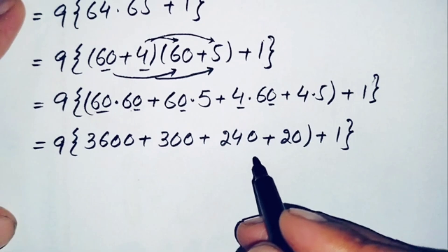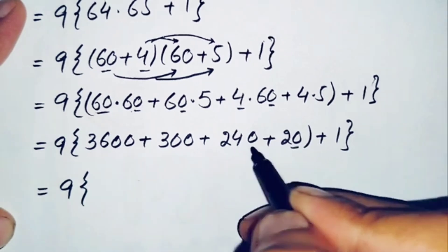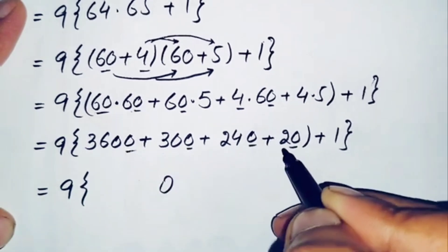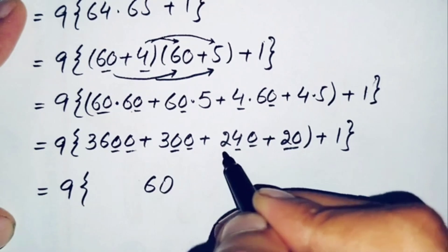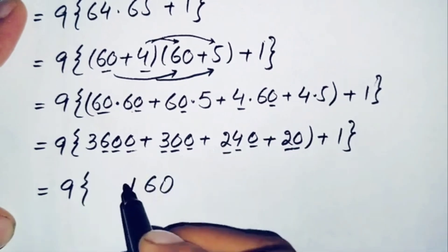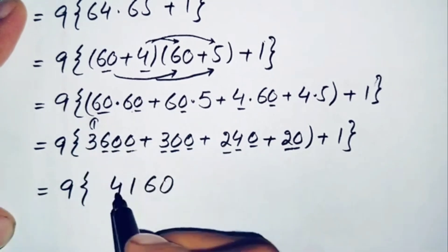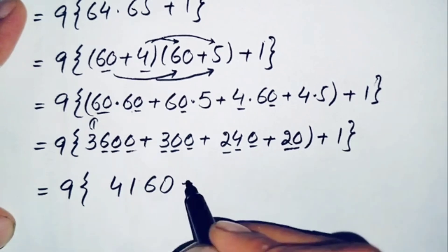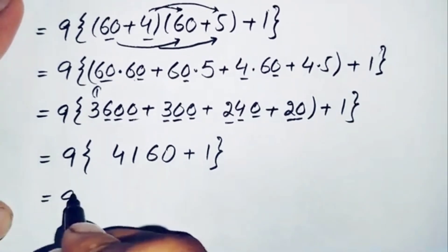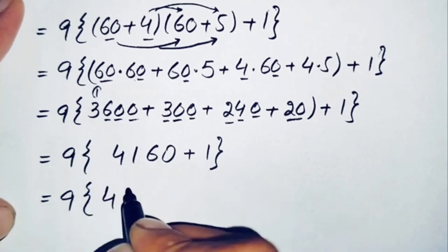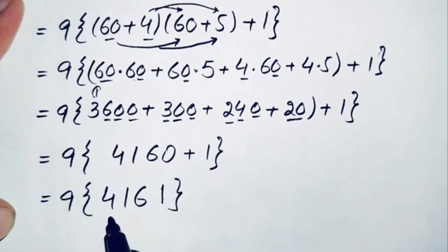Now we add the four numbers inside the parenthesis. 3600 plus 300 plus 240 plus 20 plus 1 gives 4161. So this becomes 9 times 4161.